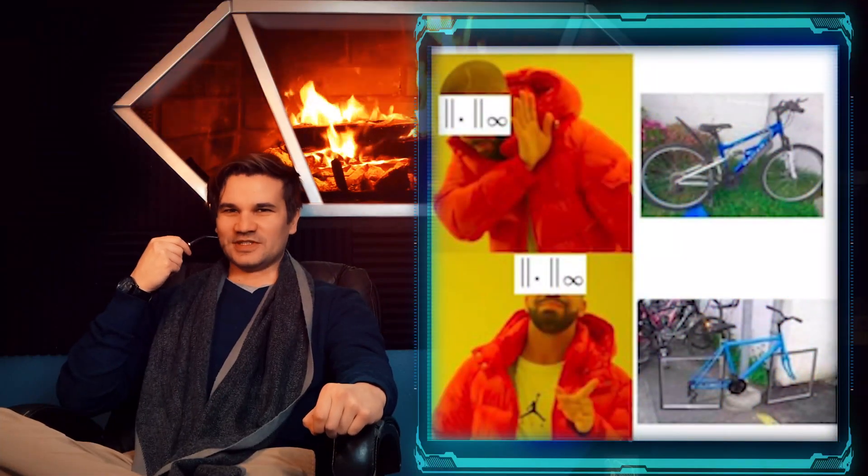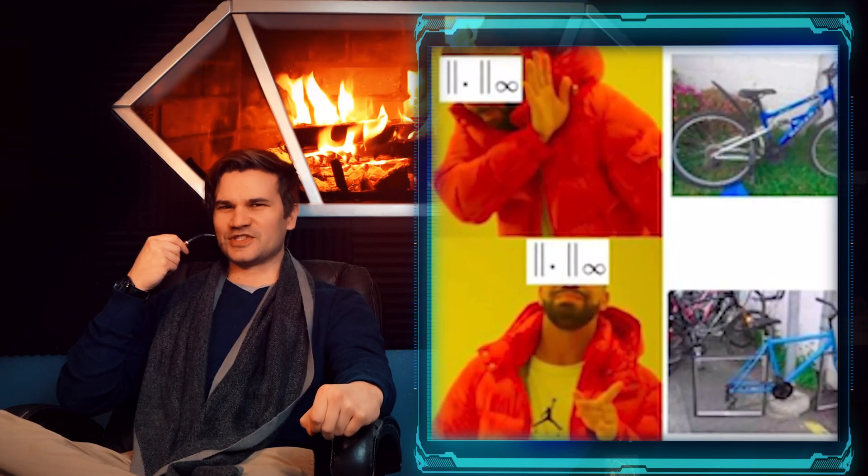The meme follows the classic Drake template, showing us two bicycles, one with round wheels and one with square wheels. To understand what's going on here, we need to address the notation on Drake's head. You see, this meme is about norms.